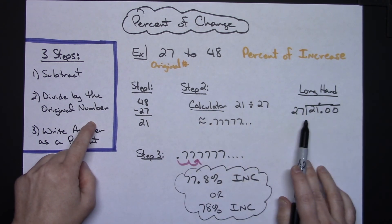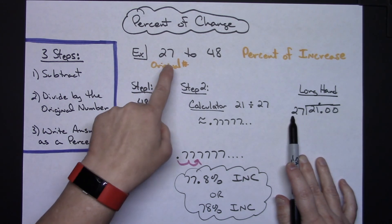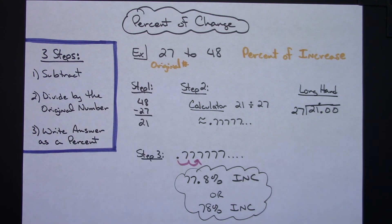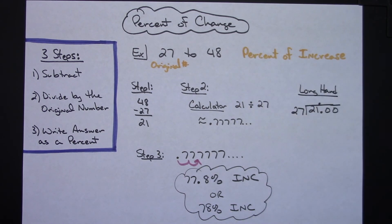If you are doing it by longhand, the answer you got when you subtracted goes inside the box. The 27, that original number, would go on the outside of the box. Do the division, move the decimal two places to the right, add the percent sign, and make that decision about whether it is a percent of increase or a percent of decrease.